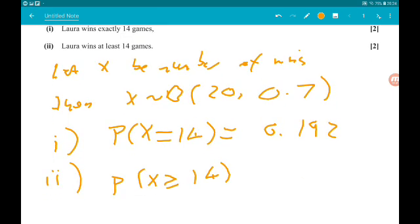So we want 14, 15, 16, 17, 18, 19, 20. We don't want 13 and below. So we're going to do 1 minus the probability x is less than or equal to 13.